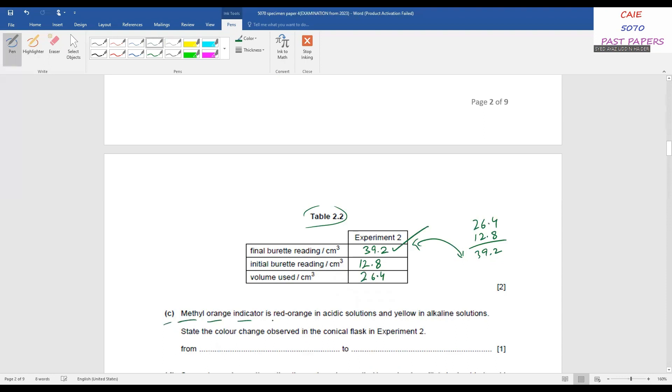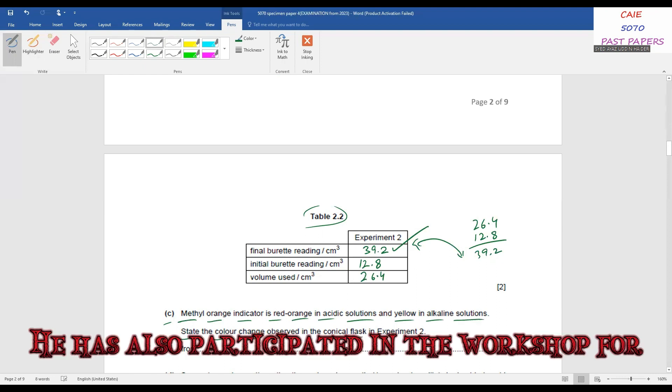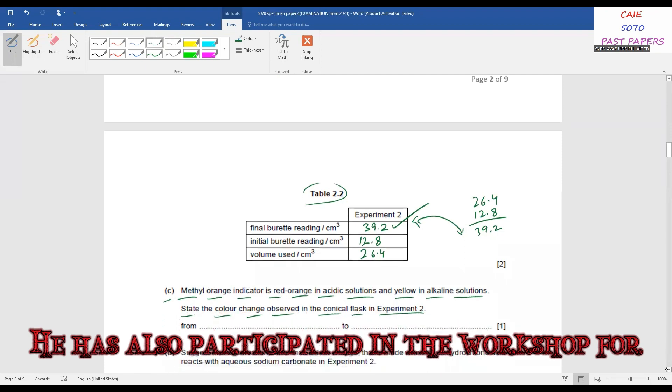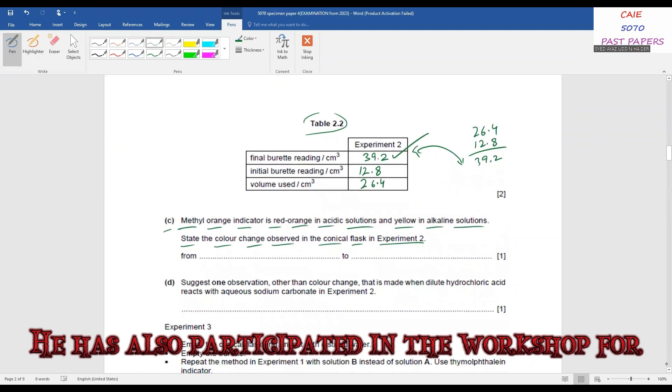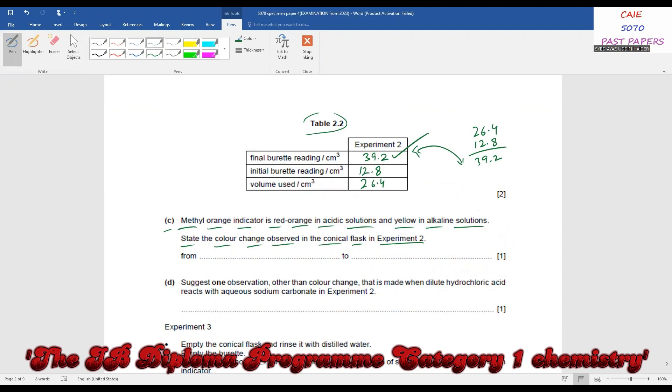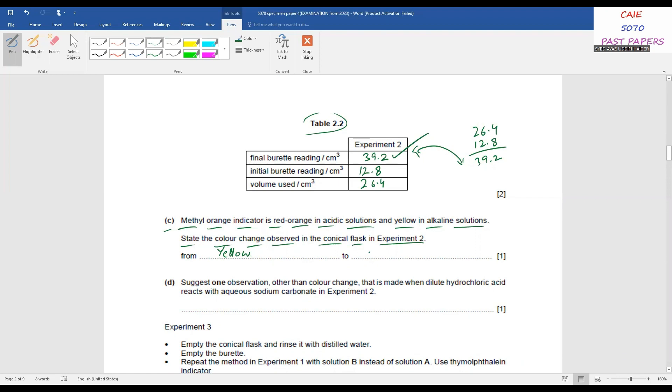Methyl orange indicator is red-orange in acidic solutions and yellow in alkaline solutions. State the color change observed in the conical flask in experiment 2. So what was added in conical flask initially? You will write that color, whether the initial solution is acid or alkaline. It is alkaline initially, so you will write yellow. Here we have sodium carbonate and acid is added, so in the end we'll get the color due to excess of acid, which should be red or orange.